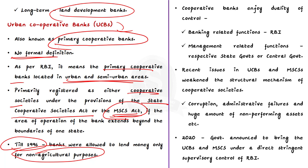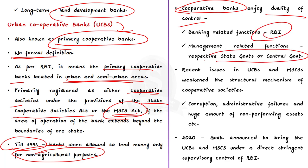Overall, we should remember an important point: cooperative banks enjoy duality of control — they are controlled by both RBI and by the respective state or central government. For example, the banking-related functions of cooperative banks are regulated by RBI, while the management-related functions are regulated by the respective state or central government. This duality of control is a very important point from a prelims perspective.